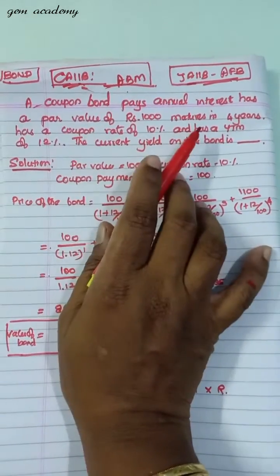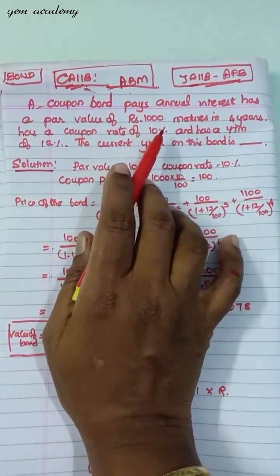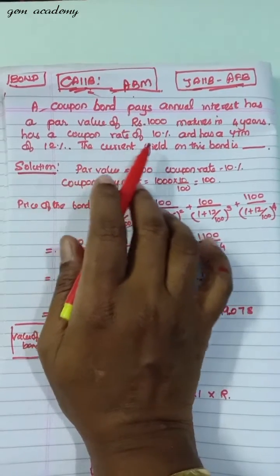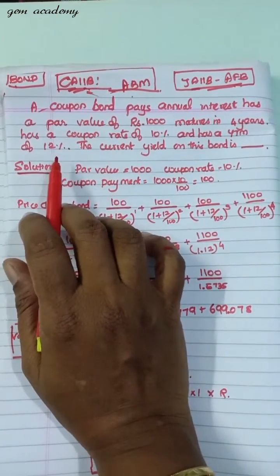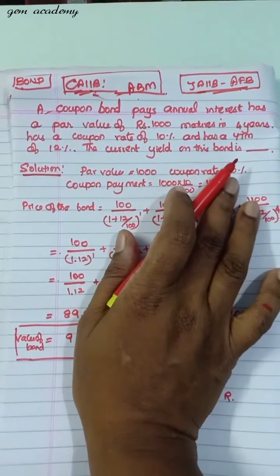The problem is: a coupon bond pays annual interest and has a par value of Rs.1000, matures in 4 years, has a coupon rate of 10% and has a YTM of 12%. The current yield on this bond is what we need to find.